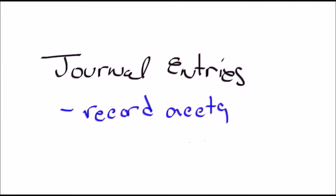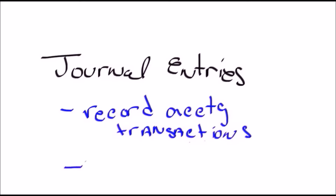The recording is done on t-accounts which we're going to take a look at next. Another important thing about journal entries is you have to make sure that the journal entries balance. If they don't balance, that means something is off.